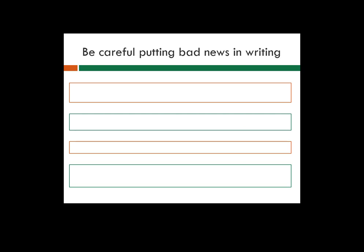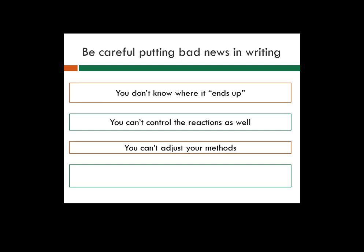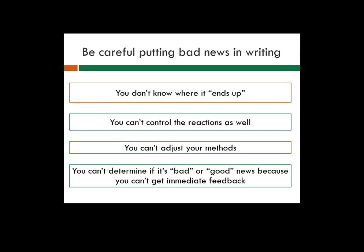Be really careful when putting bad news in writing — there are several reasons. First, you don't know where it ends up. People forward emails, people screenshot things. When you put things in writing, assume the Enron response: internal emails ended up being court evidence and literally put on the front page of a newspaper. Second, with bad news in writing, you can't control their reactions — you aren't there and can't answer questions or ask follow-up questions yourself. Connected to that, you can't adjust your methods. Maybe the service operations lead is ready to retire and happy, or maybe she just found out she has a health issue and needs insurance — you don't know, and if you're delivering information in writing, you can't make those kinds of adjustments.